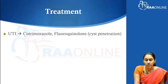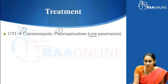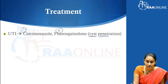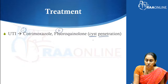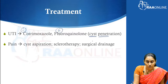For treating urinary infections in these patients, cotrimoxazole and fluoroquinolones are the two antibiotics with very good cyst penetration. Whenever treating a suspected urinary infection or cyst infection in polycystic kidney disease, make sure the patient is on one of these two drugs. If the patient has pain, cyst aspiration may be helpful, or the patient may opt for sclerotherapy or surgical drainage.